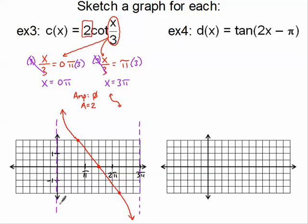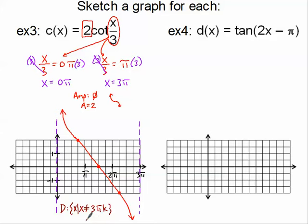Let's practice the domain. It's a set of infinite restrictions: all x such that x is not equal to. The original asymptote is right at 0 pi. The asymptotes are 3 pi apart, so I add a multiple of 3 pi k. That describes my domain — all x such that x is not equal to 3 pi k.